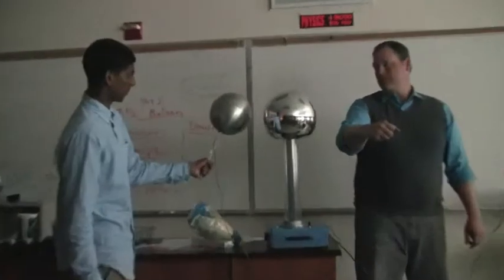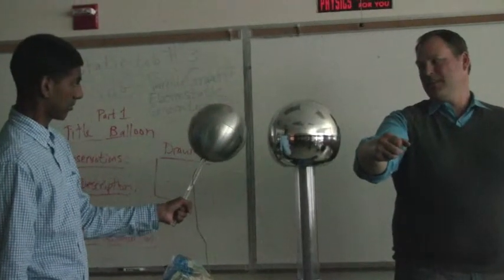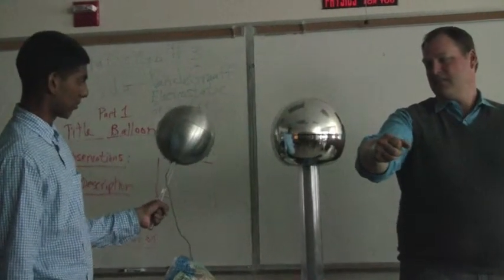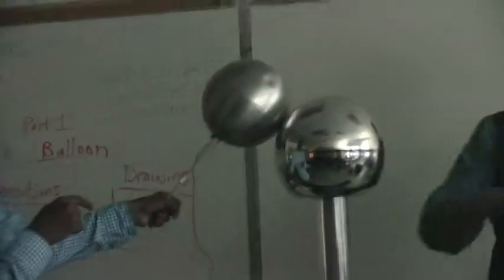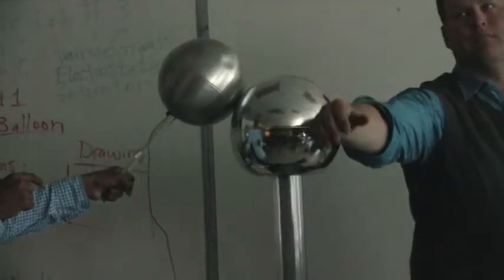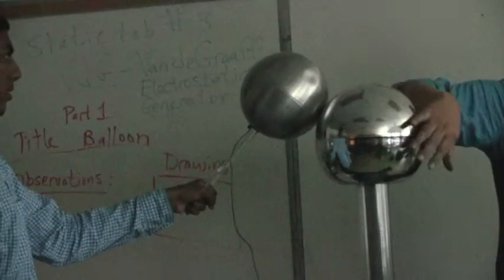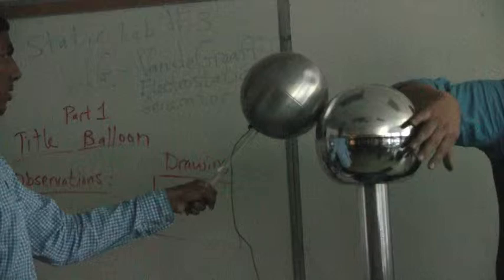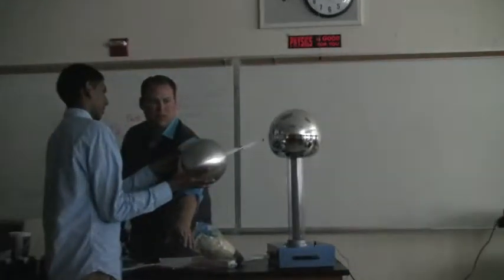The electrons of the Van de Graaff prefer to go to the Mini-Me because it is made out of metal. It does go to Mr. Nadeau, but when the Mini-Me is just as close, it prefers to go to the Mini-Me because it is a better conductor. Mr. Nadeau is unaffected because he is an insulator compared to the Mini-Me. The plexiglass is such a poor conductor that no electrons from the Van de Graaff go to it.